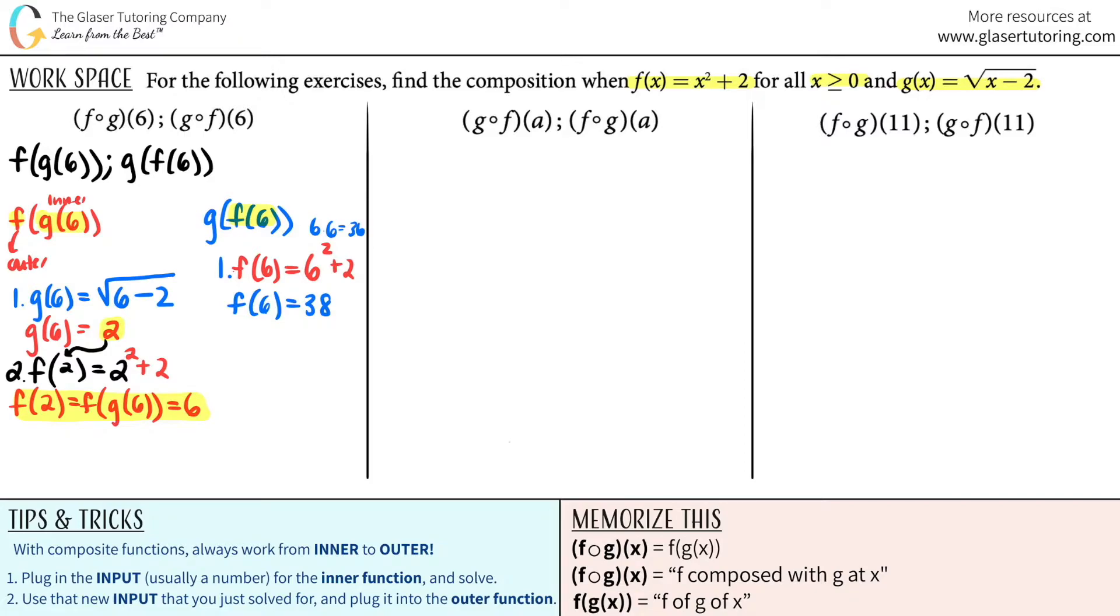So now the second part is you use that number and you plug it in for the outer function. And the outer function was g. So this would be g of 38. The g function is the square root of x minus 2. So it would be the square root of 38 minus 2. 38 minus 2 is 36. The square root of 36 for g of 38 would just be 6. So let me just put that in and just know that this equals g of f of 6. And this all equals 6.